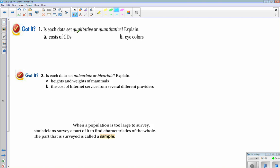So number one, is each data set qualitative or quantitative and explain? The costs of CDs is an actual amount that we can measure. So it's quantitative.